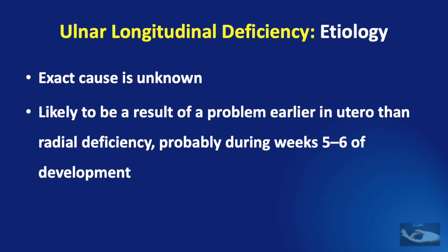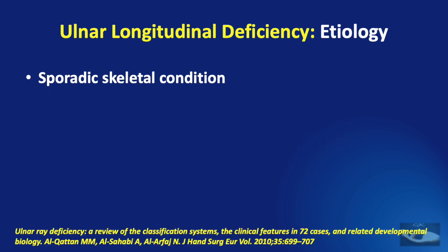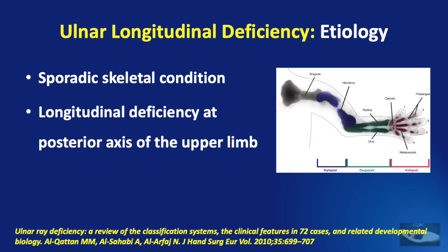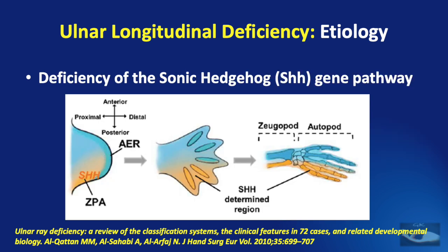As far as the etiology is concerned, the exact cause why Ulnar longitudinal deficiency occurs remains unknown. It is likely to be a result of a problem earlier in utero than radial deficiency, probably occurring during weeks 5 to 6 of development. It has been proved that it is a rare, sporadic skeletal condition, and the longitudinal deficiency occurs at the posterior axis of the upper limb where the Ulnar bone is situated. This is the place where the zone of polarizing activity occurs, and deficiency of the sonic hedgehog gene pathway is responsible for the development of the Ulnar-sided forearm structures and 4 Ulnar-sided digits.